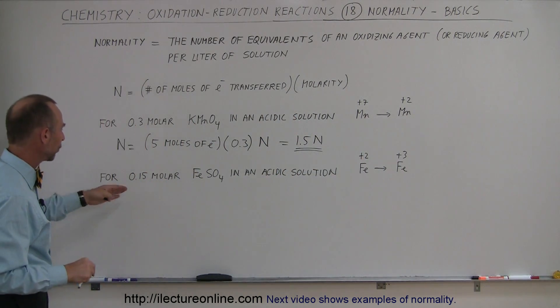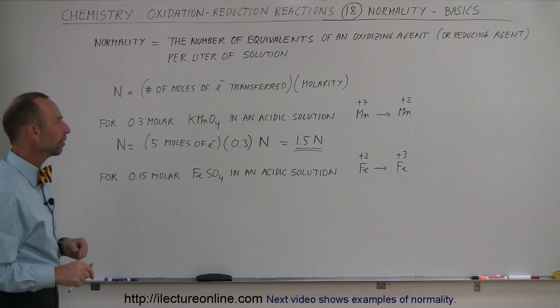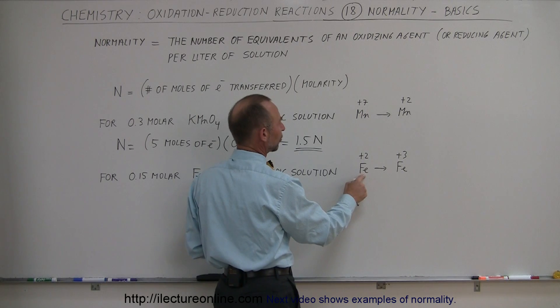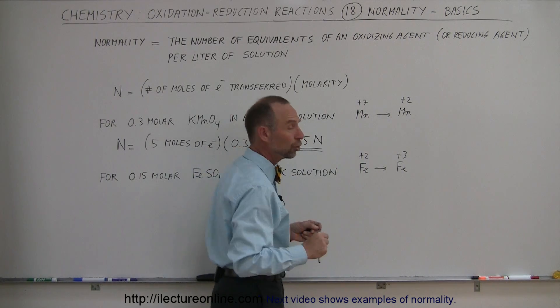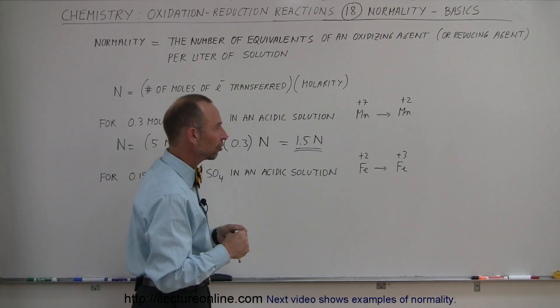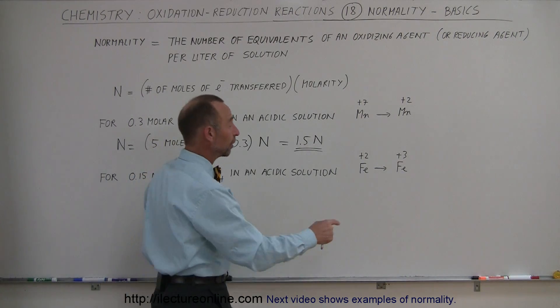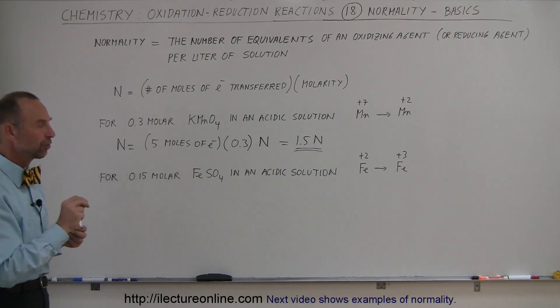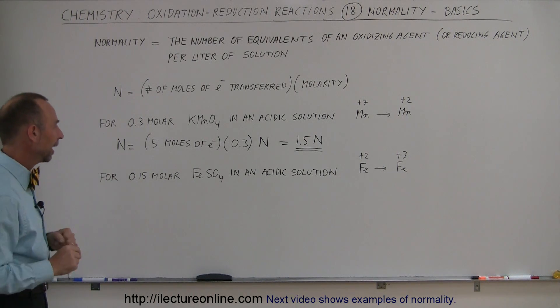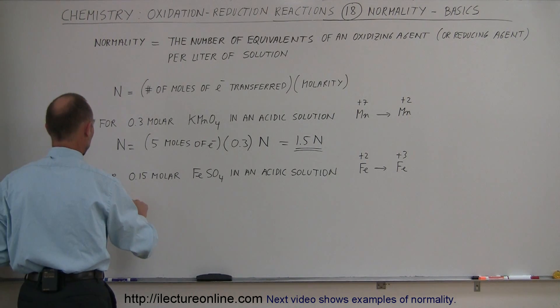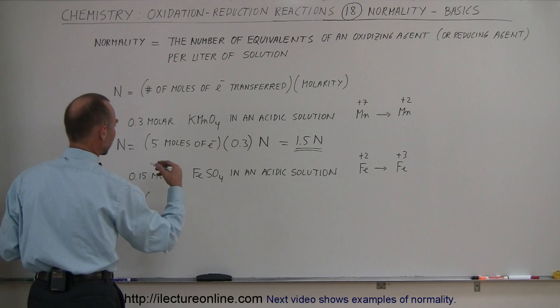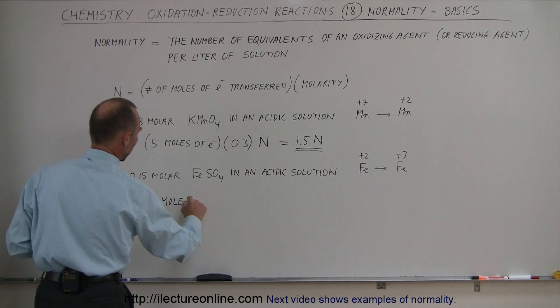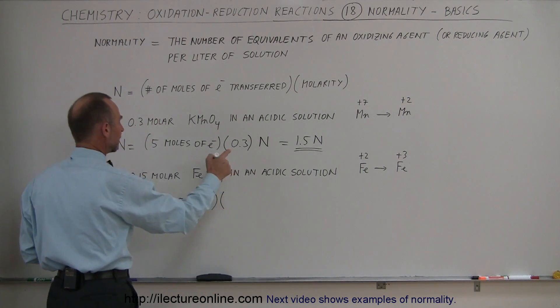Now let's say our second example here for 0.15 molar iron sulfate. Remember, in iron sulfate in an acidic solution, the iron starts out with oxidation number plus two and then donates one additional electron to go to an oxidation state of plus three, which means only one mole of electrons will be transferred per one mole of iron sulfate. And so therefore, the normality in this case will be the number of electrons transferred, which is one mole of electrons transferred times the molarity.